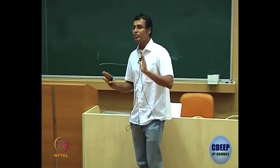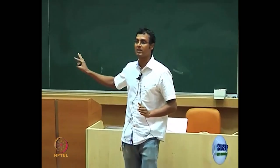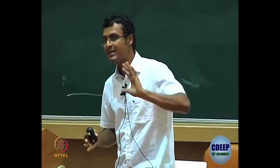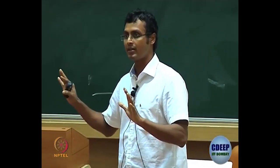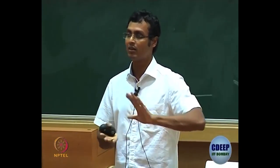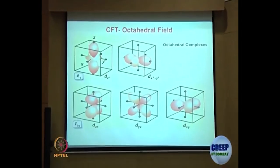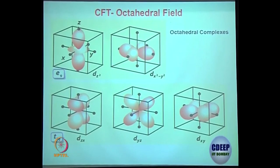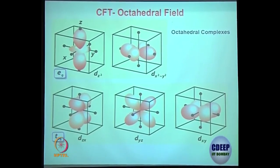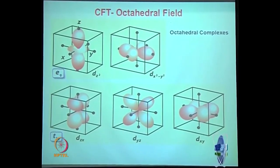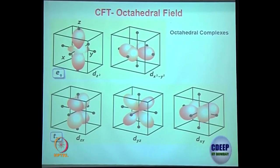That is a good question — that is where we will come to Jahn-Teller distortion, which you will clearly understand when we discuss it. That is actually the origin of Jahn-Teller distortion and z-elongation. This is the same thing shown in a different way. The black balls are the ligands and the metal d orbitals are shown here clearly — no confusion.